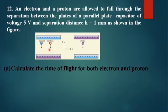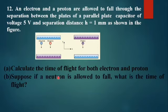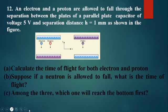Calculate the time of flight for both the electron and the proton. Next, suppose a neutron is allowed to fall — what is the time of flight? And number three: which one will reach the bottom first?